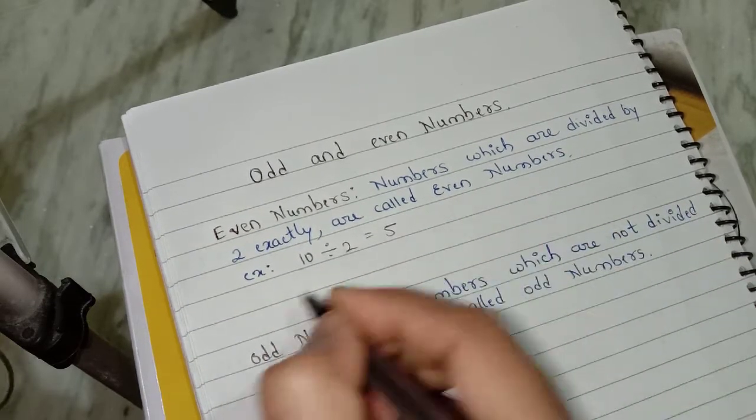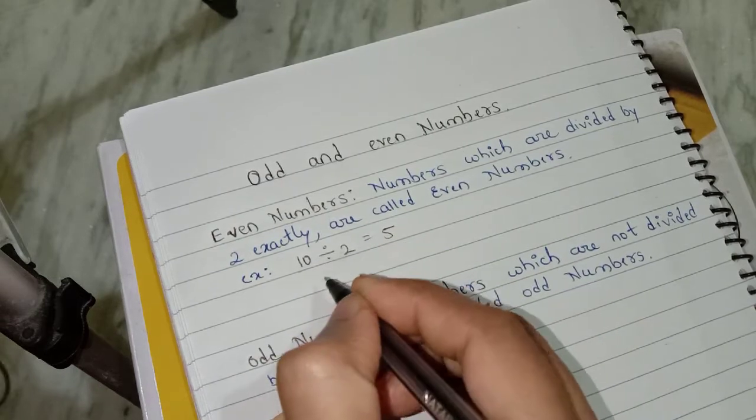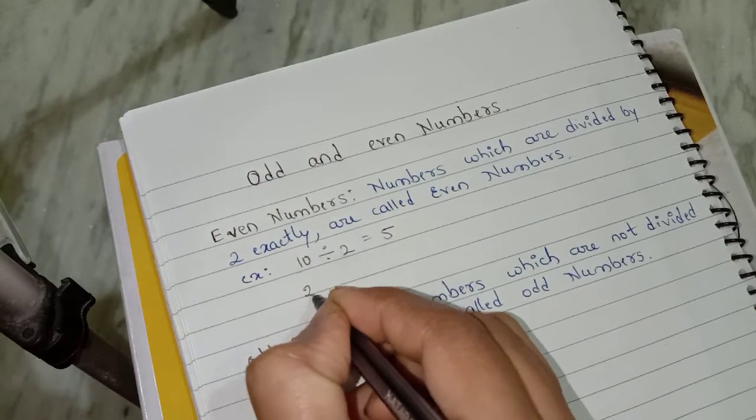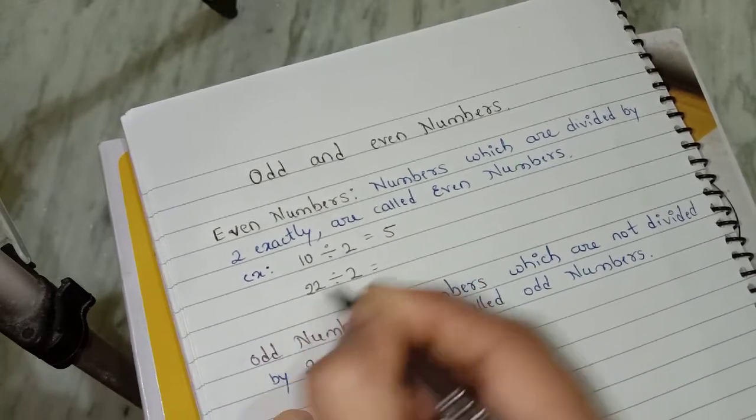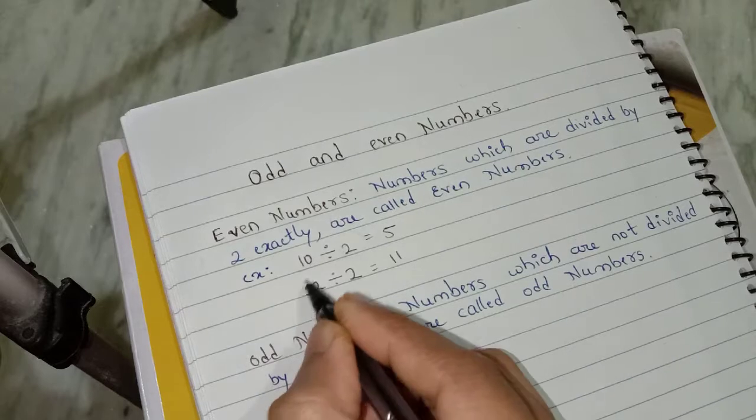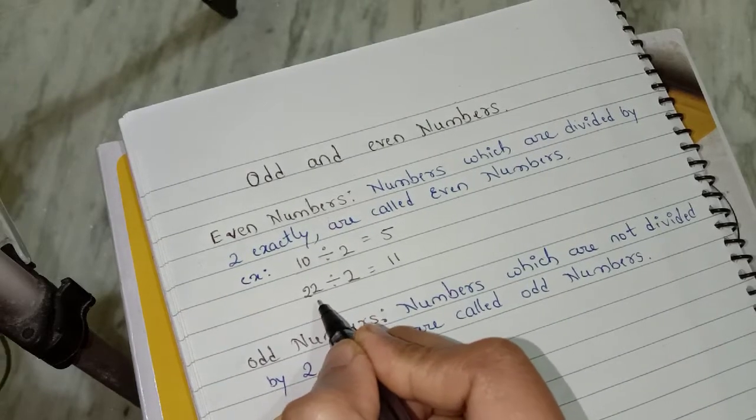I will take one more example. 22 is going to divide by 2. Here I got 11. So here 22 I can divide by 2 exactly.